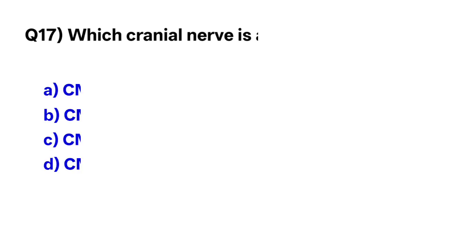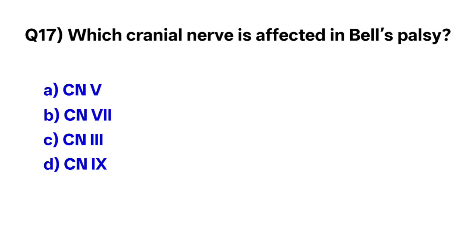Question number seventeen: Which cranial nerve is affected in Bell's palsy? The correct option is B, cranial nerve 7.